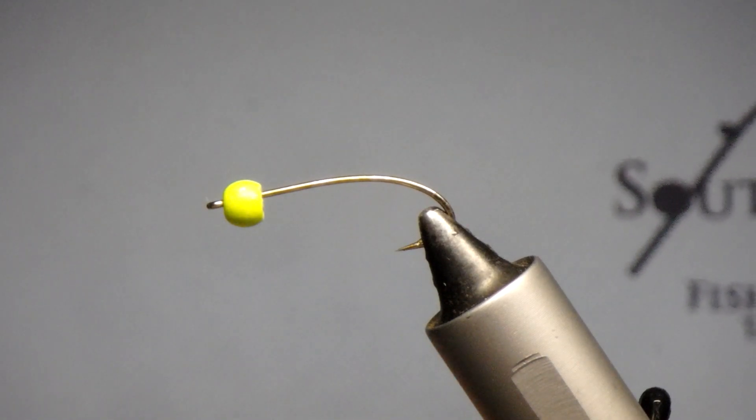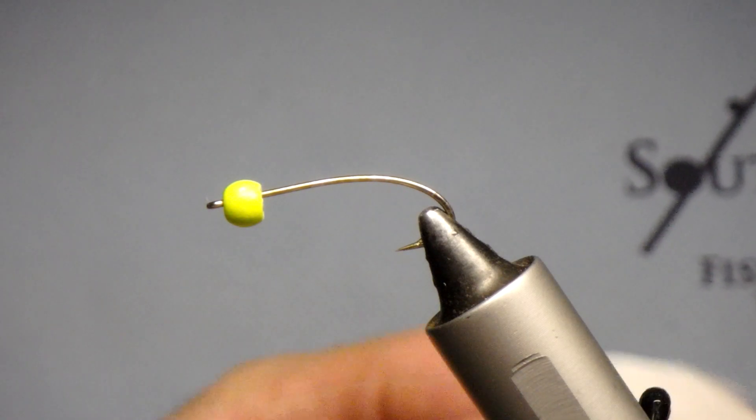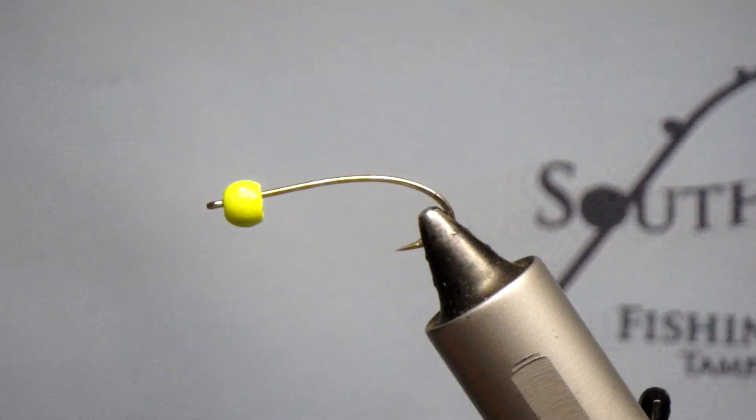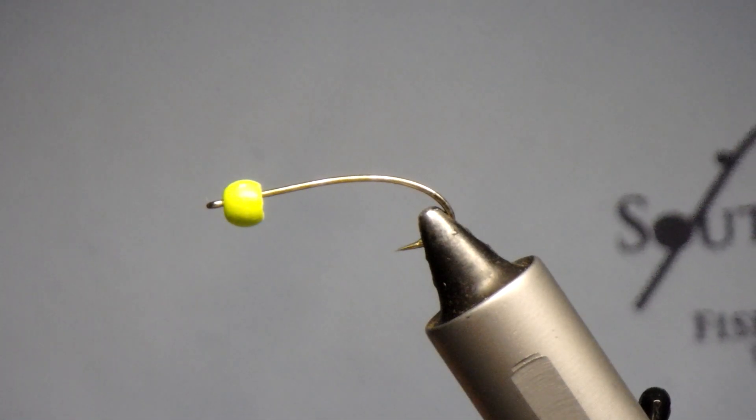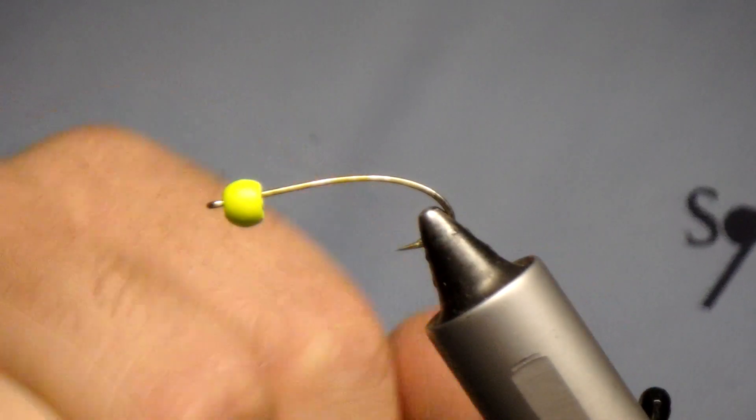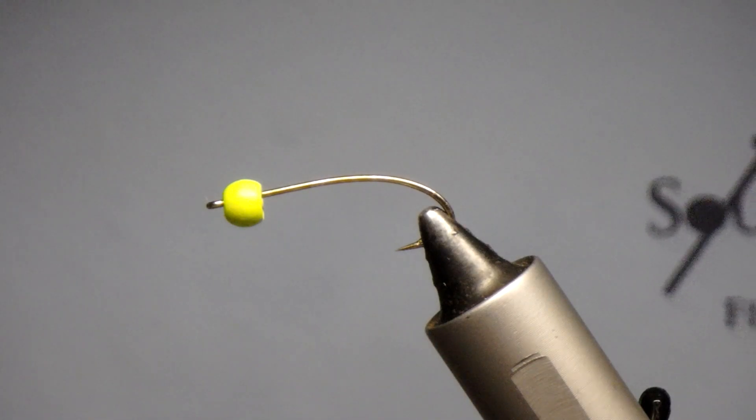You can tie this pattern in black, purple, or white and you can do it in a variety of different heads. This head is a chartreuse head, you can do it in hot pink or fluorescent orange and you can do it with these nice little beads or you can do it with some chenille or egg yarn.